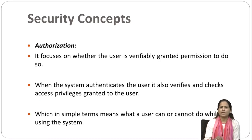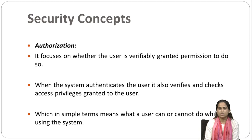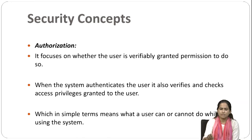Next is authorization. It focuses on whether the user is verifiably granted permission to perform a task or not. Whatever task the user is doing, whether permission is granted for that — that process is called authorization. When the system authenticates the user, it also verifies and checks the access privileges granted to the user, which in simple terms means what a user can or cannot do while using the system.